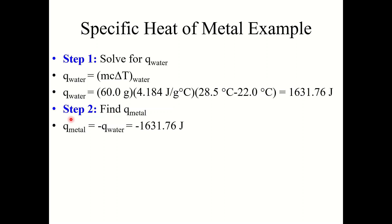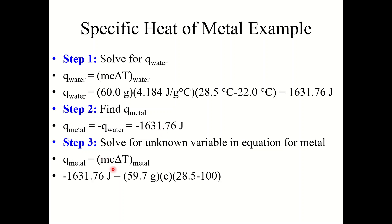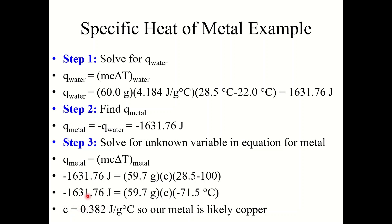Step two: find Q-metal. Q-metal equals negative Q-water, which means Q-metal equals negative 1,631.76 joules. Now solve for the unknown variable C. We know the mass, we know the change in temperature, but we don't know C. Plugging in Q, mass, and the temperature values and solving algebraically, we get C equals 0.382 joules per gram degrees Celsius. That answers the first part. For the second part — identify the metal — the metal is likely copper. On an exam, you'd be given a table with four or five different metals and their specific heat values, and you'd identify the metal that most closely matches the specific heat value you solved for.